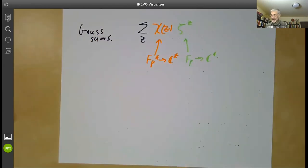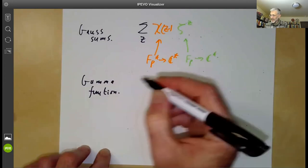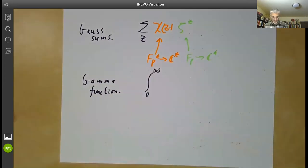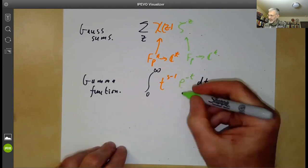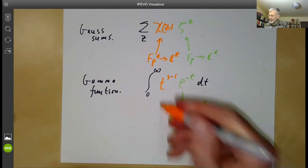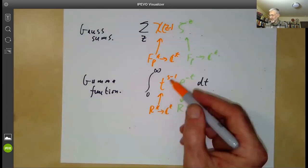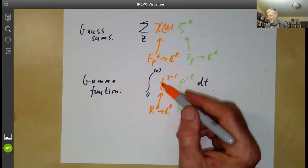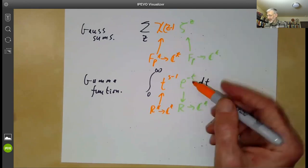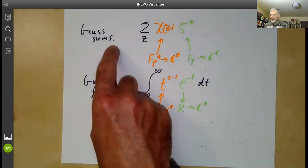Gauss sums are really a variation of the gamma function over a finite field. To see this, recall the gamma function: Γ(s) = ∫₀^∞ t^{s−1} e^{−t} dt. Here e^{−t} is a homomorphism from the reals to ℂ*, and t^{s−1} is a homomorphism from the positive reals to ℂ. The Dirichlet character is the analogue of a power of t, and the power of a root of unity is the analogue of e^{−t}. Almost any formula involving the gamma function has an analogue for Gauss sums.